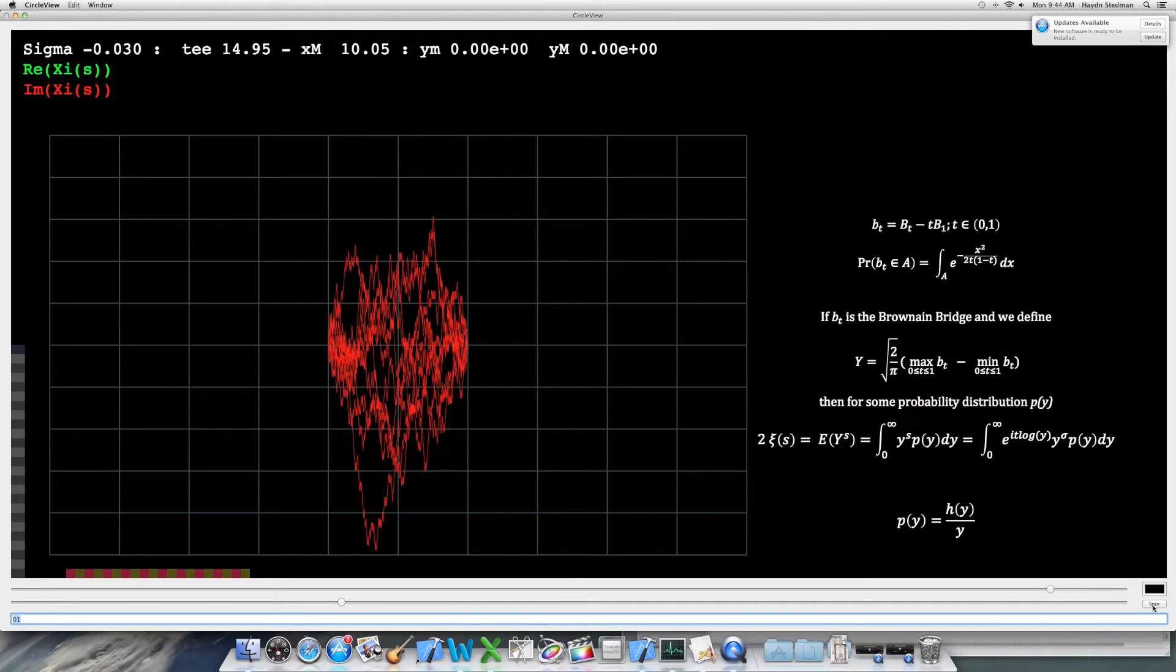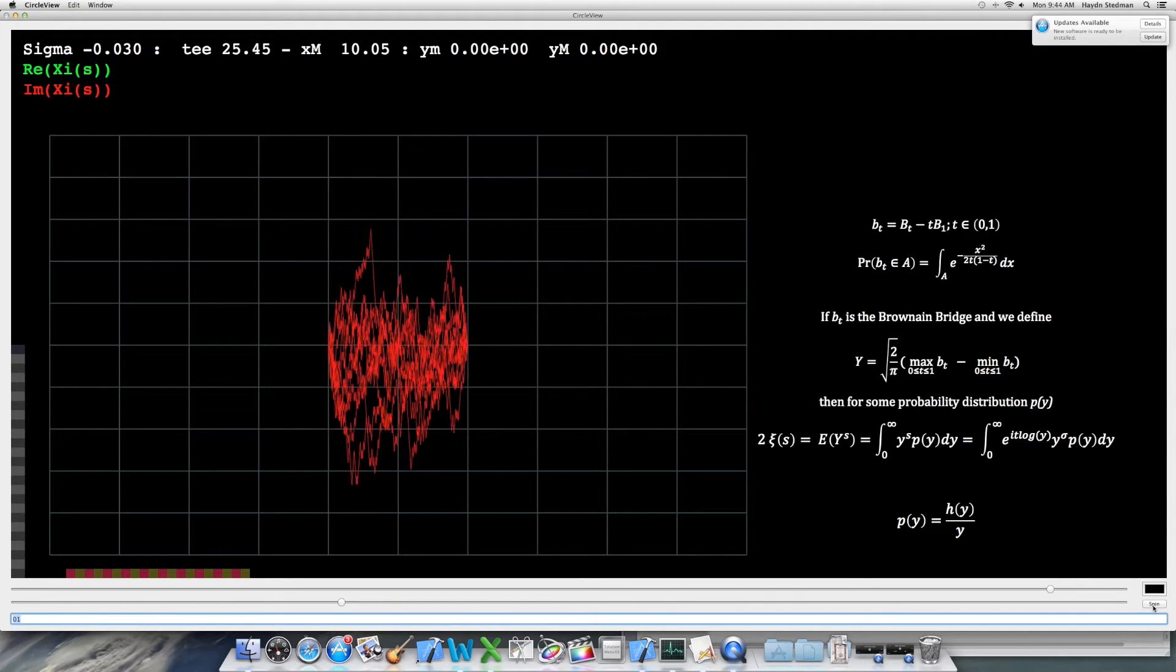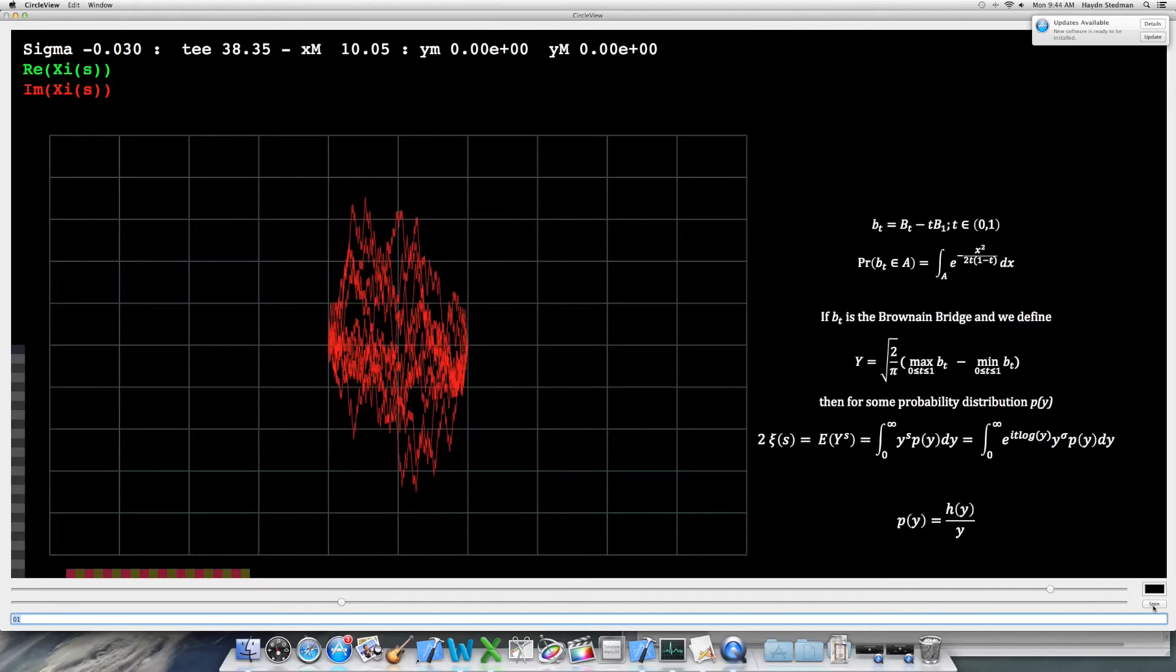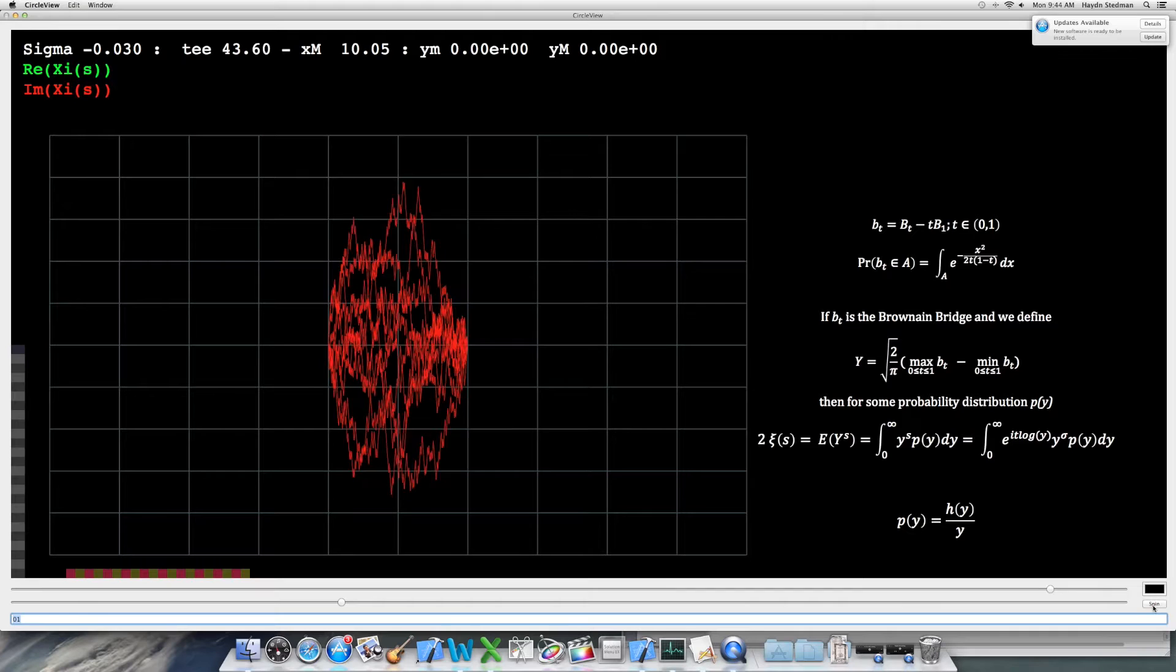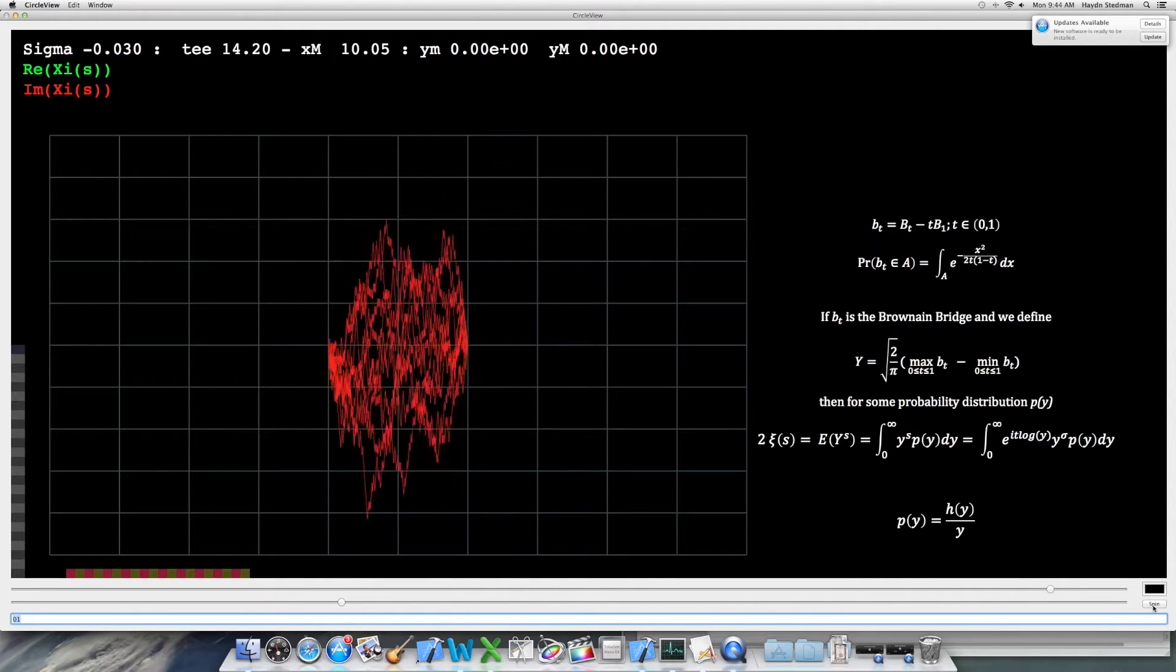We see the Brownian bridge as an entity of finite but effectively quintessentially unknowable energy. The result is that Xi is equal to the expected value of Y to the S where Y is the random variable representing the height of the Brownian bridge.